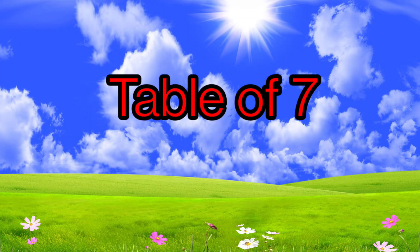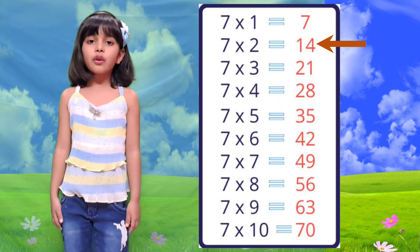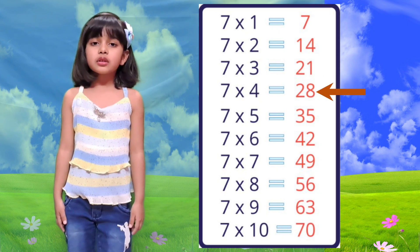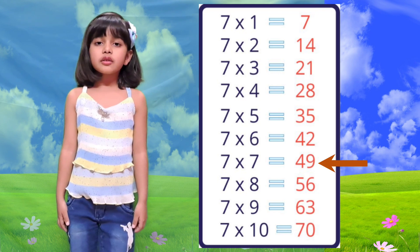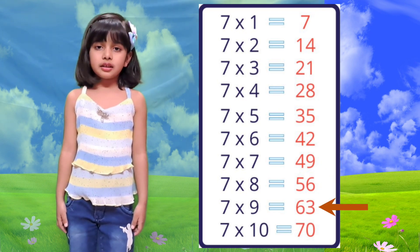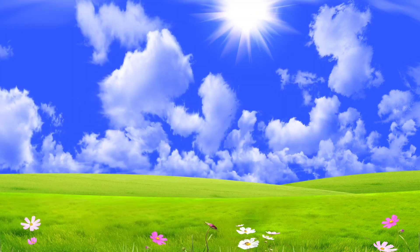Now table of 7. 7 1 is 7, 7 2 is 14, 7 3 is 21, 7 4 is 28, 7 5 is 35, 7 6 is 42, 7 7 is 49, 7 8 is 56, 7 9 is 63, 7 10 is 70.